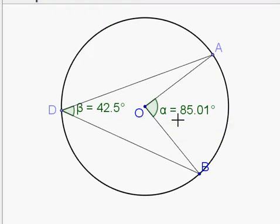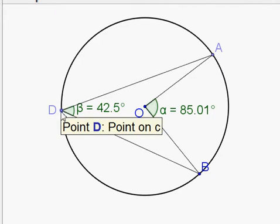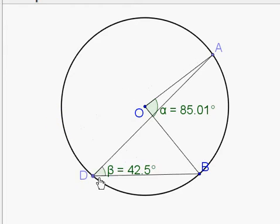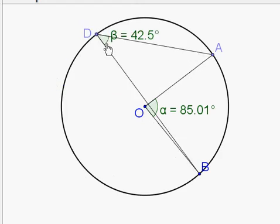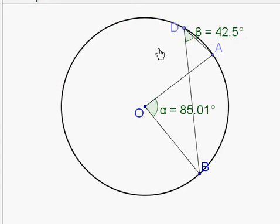And if I were to kind of move the point D around, it doesn't actually change. This angle will always be one half of the angle AOB as long as D is on the side of the segment, the invisible segment AB.